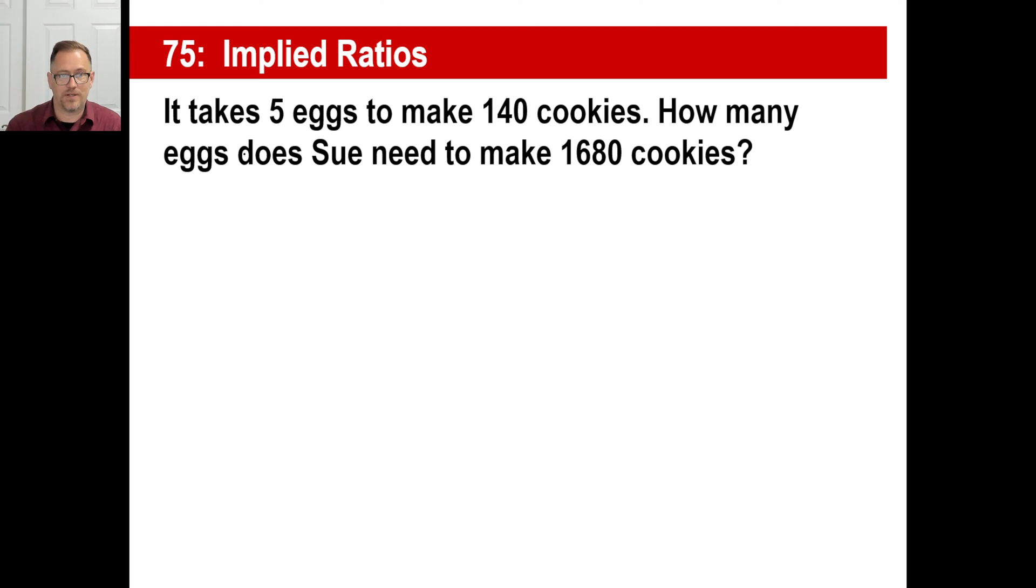So, this is the ratio. It's the same old thing as our fraction equals fraction. I got 5 eggs. That goes with 140 cookies. How many eggs? I don't know. We'll call it X. Does Sue need to make this many cookies? There you go. So, in other words, in this ratio, the eggs are on the top and the cookies are on the bottom.